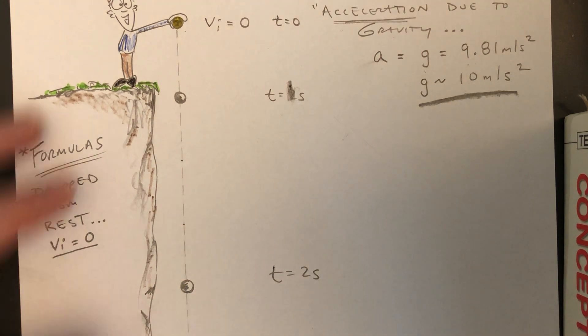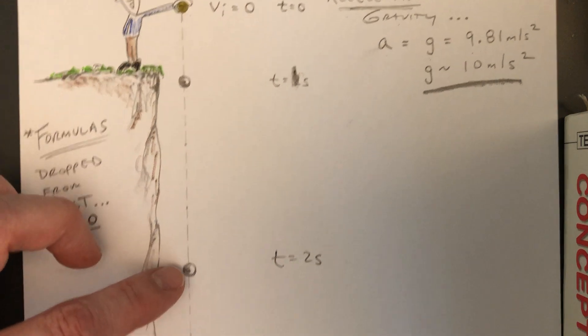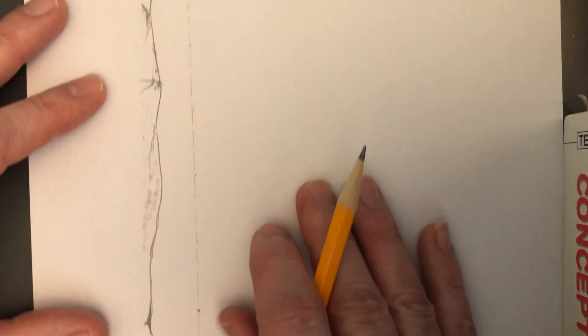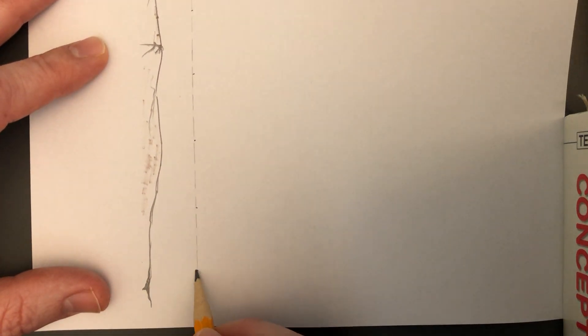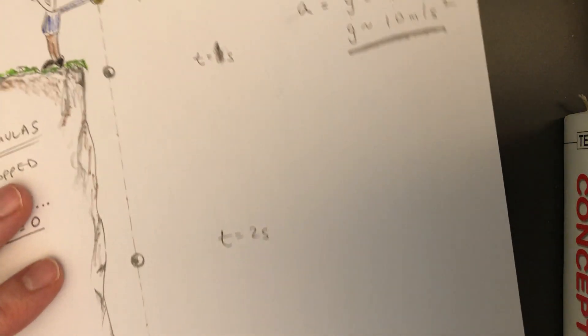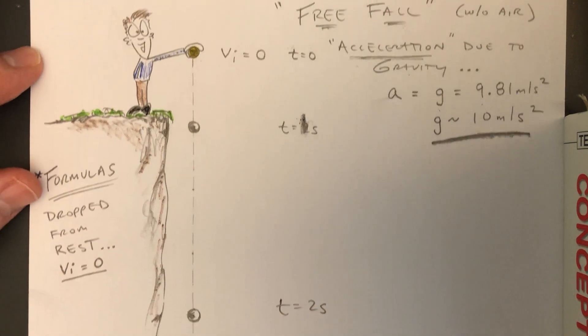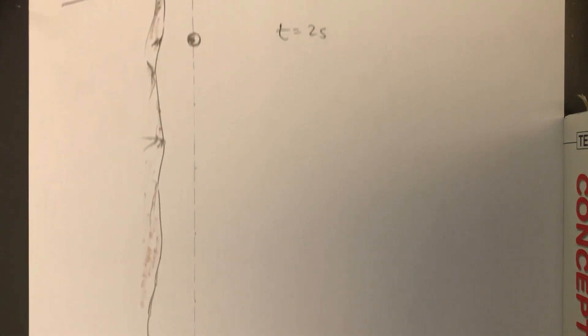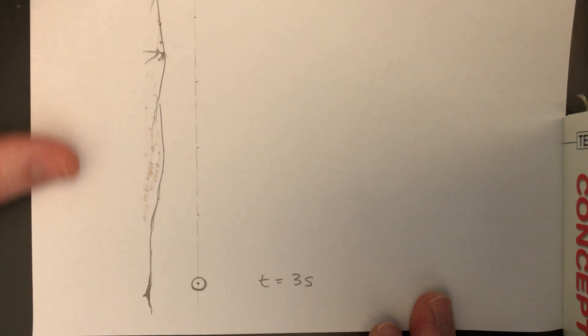If it was to continue to fall, it wouldn't be that much distance down here, it would be all the way down here at t equals three seconds. So hopefully you see that this looks very similar to that spark timer tape that we were using as an object speeds up.